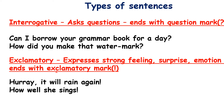Exclamatory sentences express strong feeling, surprise, or emotion, and they end with an exclamation mark. Example: 'Hooray! It will rain again!' — exclamation mark. 'How well she sings!' — exclamation mark. Whenever you express your feeling, surprise, or emotion in a sentence, you use an exclamation mark. Words like 'Hooray!', 'Alas!', 'Oh my God!' are all exclamatory sentences.